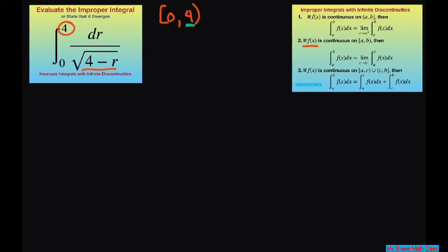So let's rewrite this using part b here. This is going to be the limit as b approaches 4 from the left, and we're substituting in our 4. So we're putting in b here and 0 there, and then just copy down your integrand dr over square root of 4 minus r.